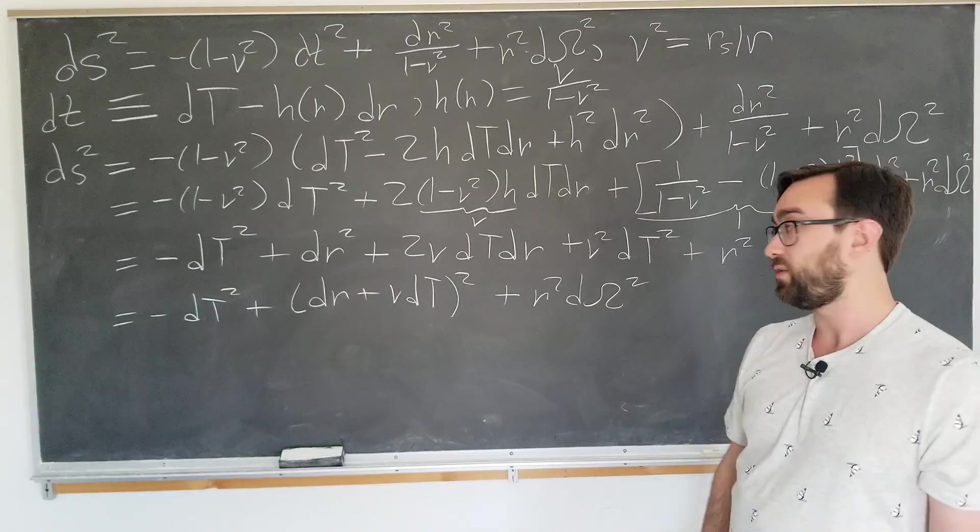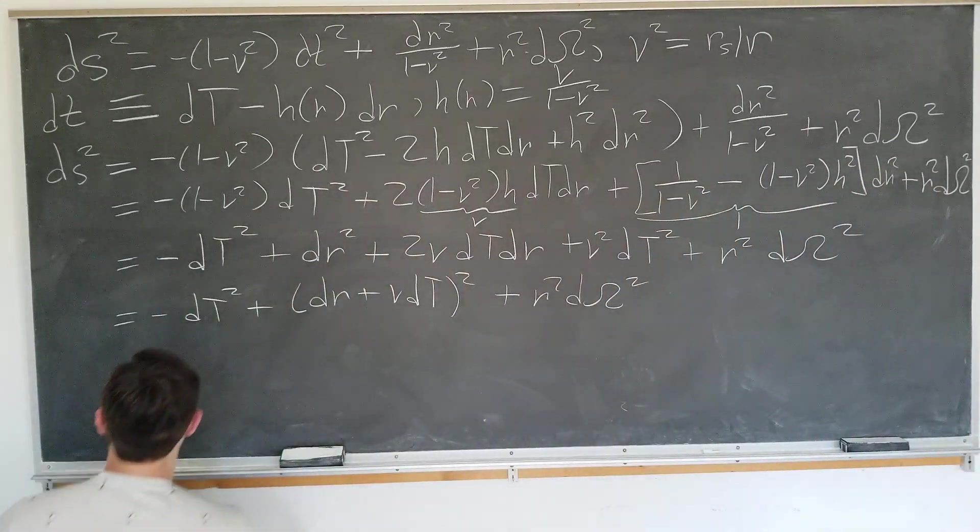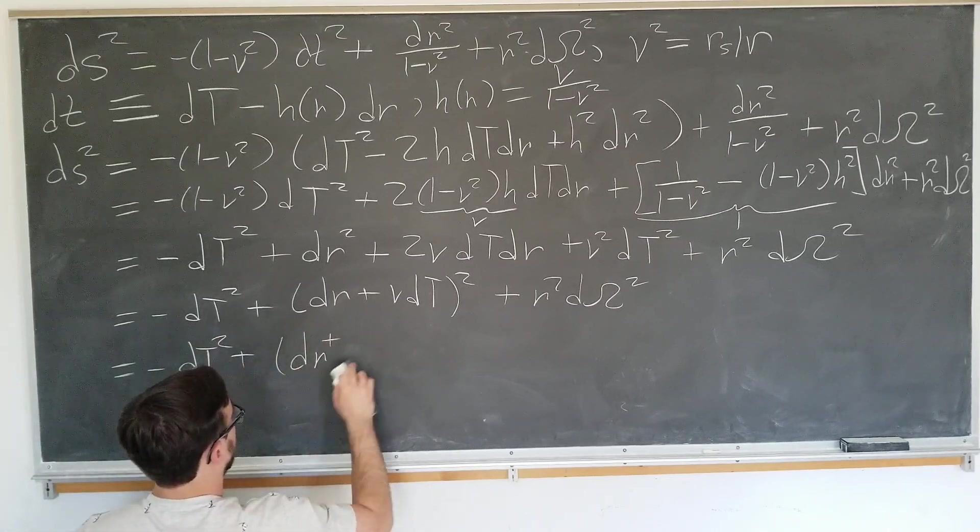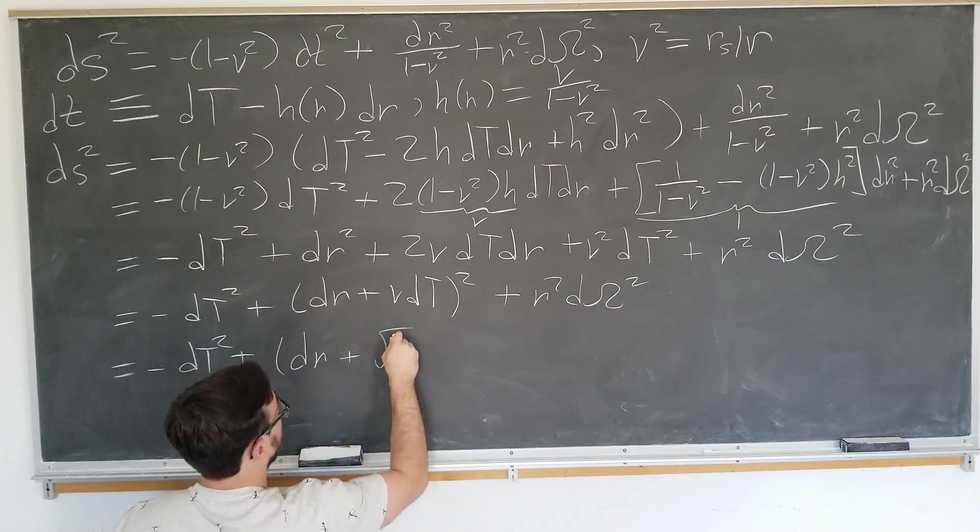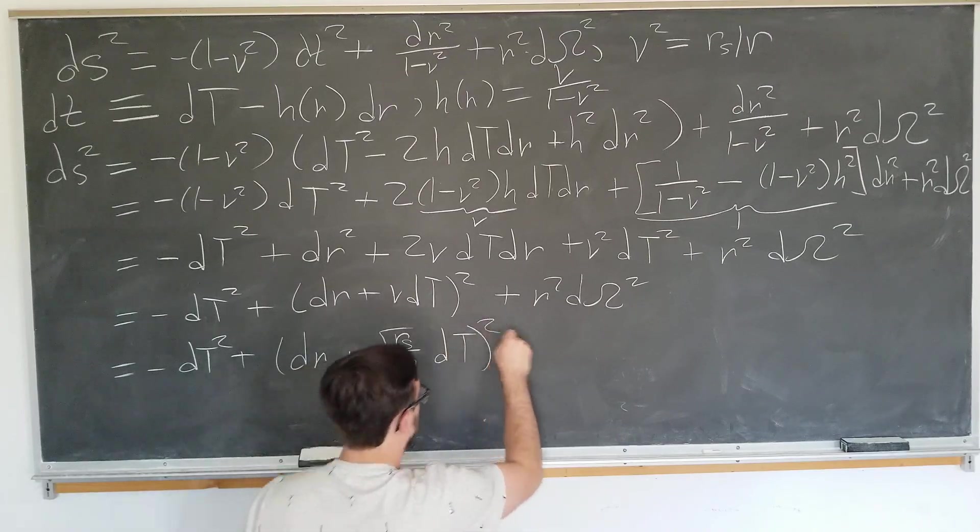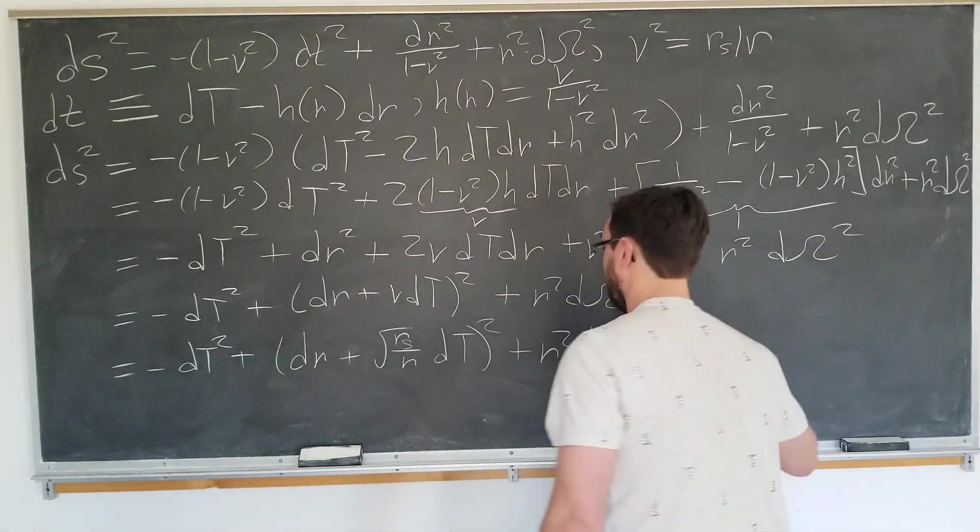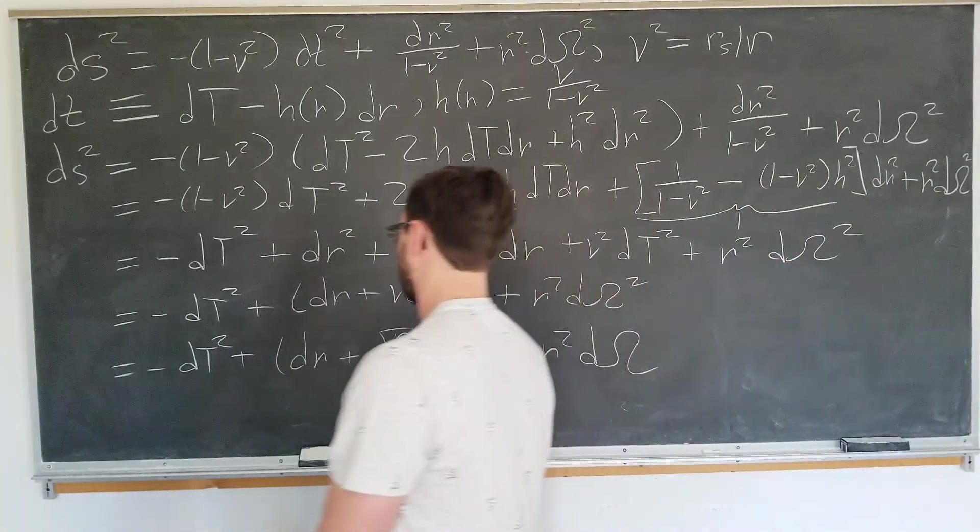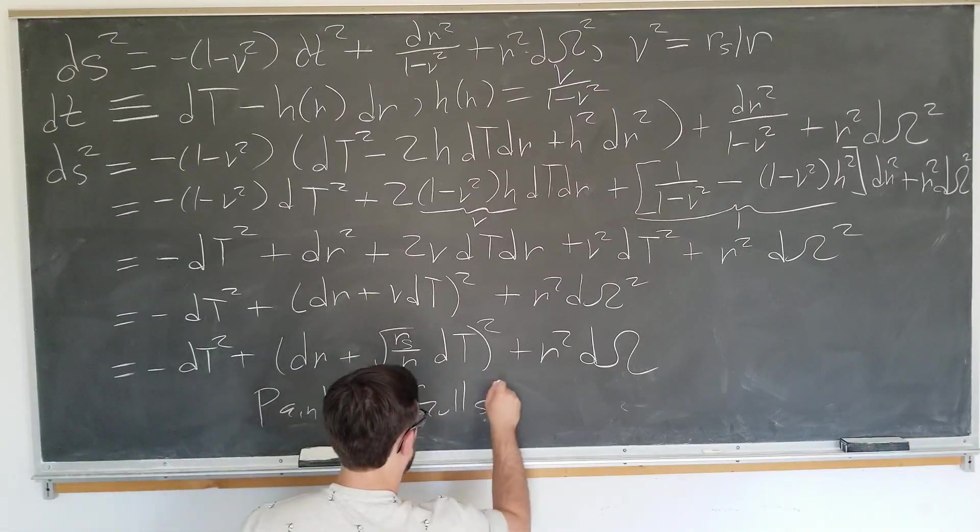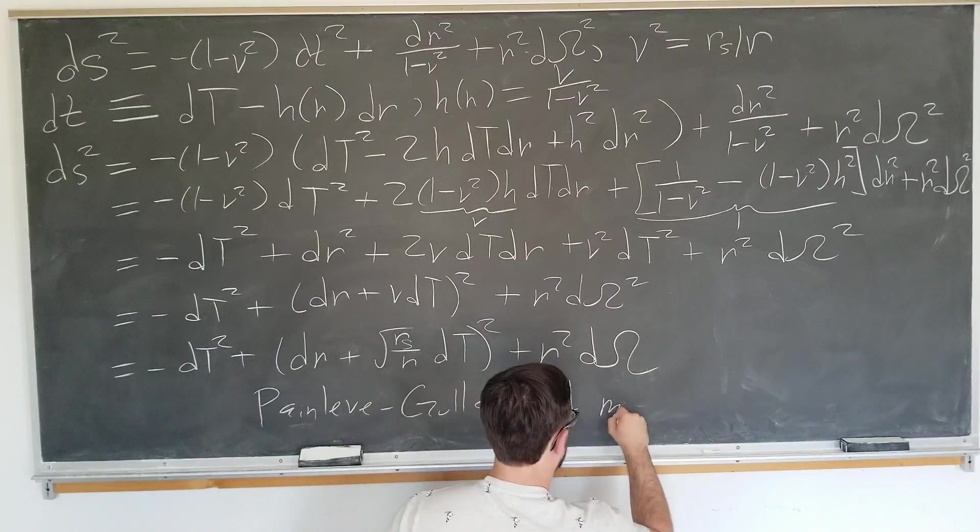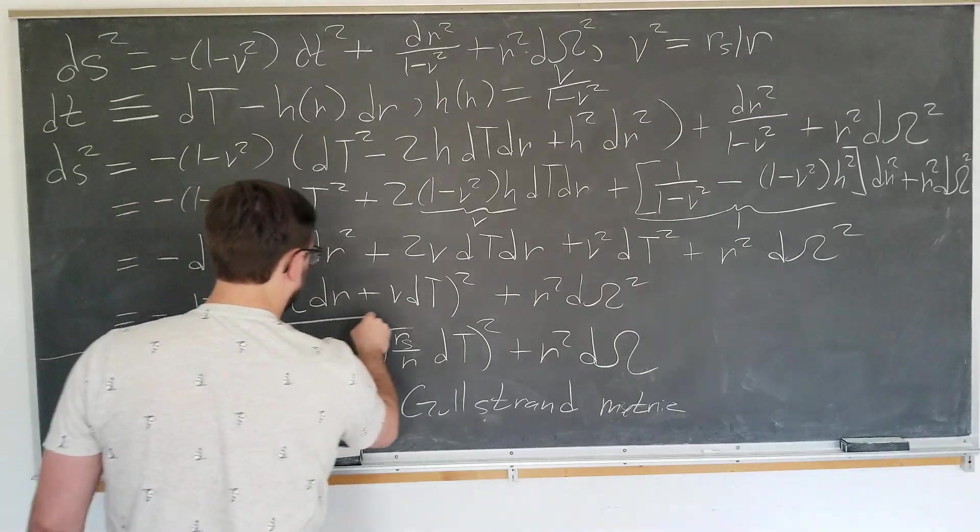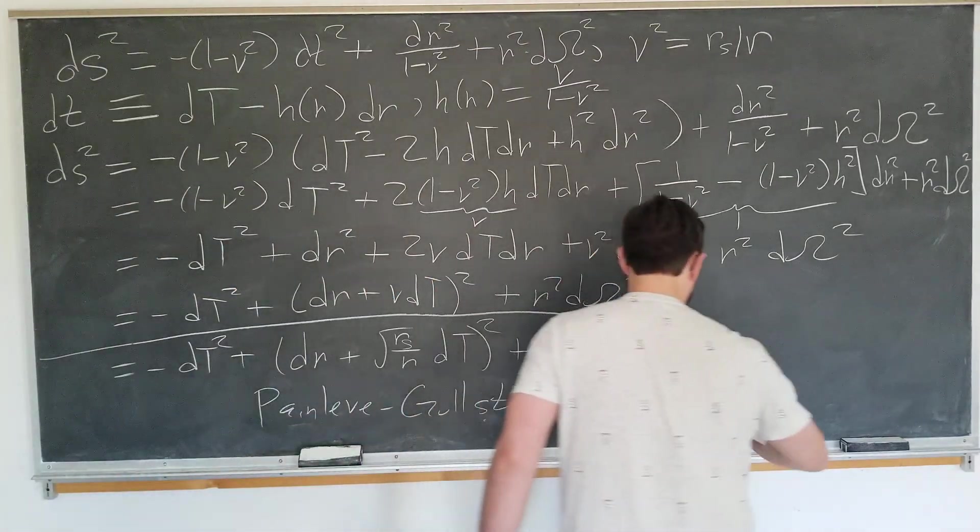Now to write our final answer, we're just going to write v out in terms of the Schwarzschild radius. Minus dt squared plus the square root of rs over r dt squared plus r squared d omega squared. This is our final answer for the Painlevé-Gullstrand metric, or you can think of it as the Painlevé-Gullstrand coordinates. This is our final answer.